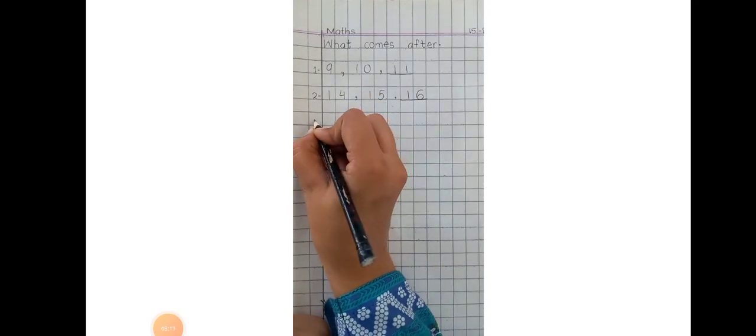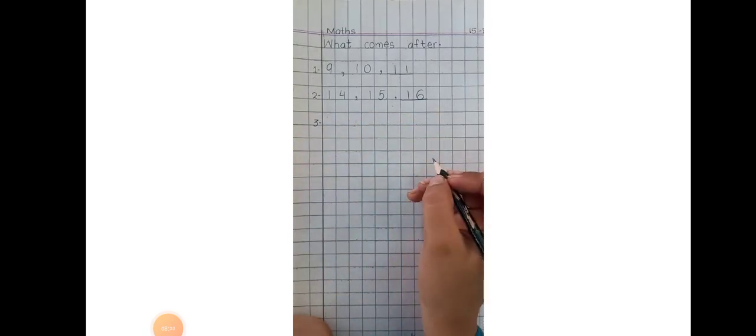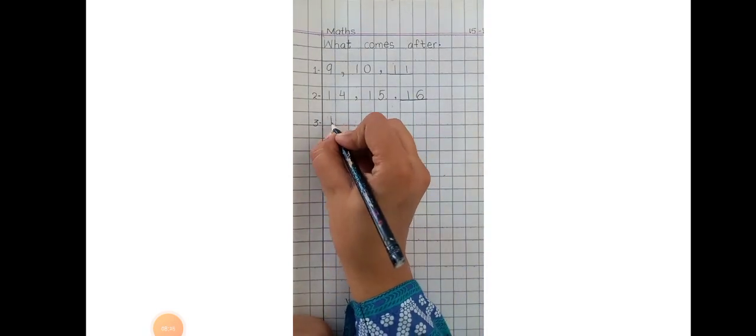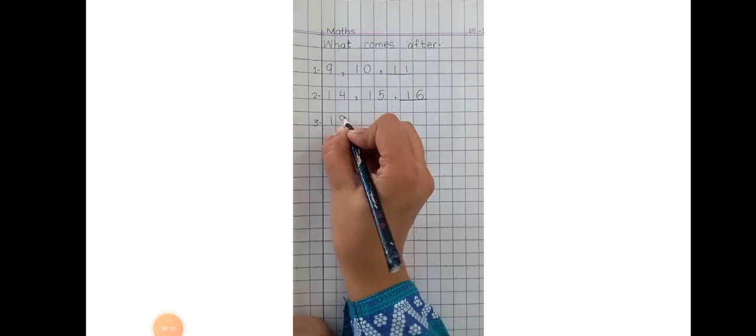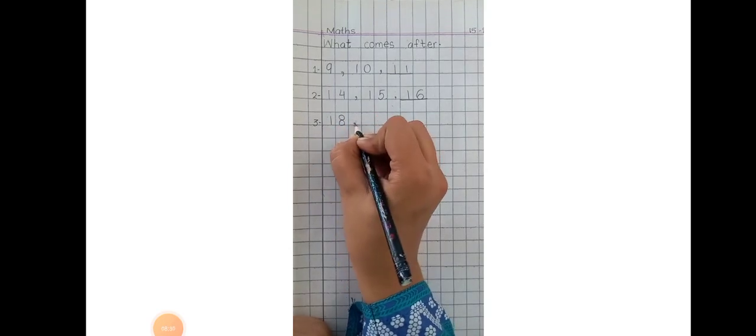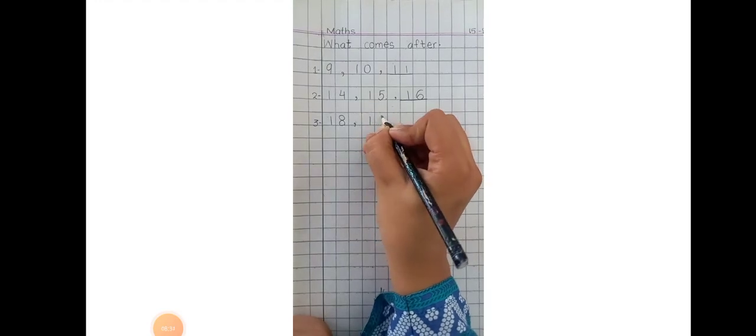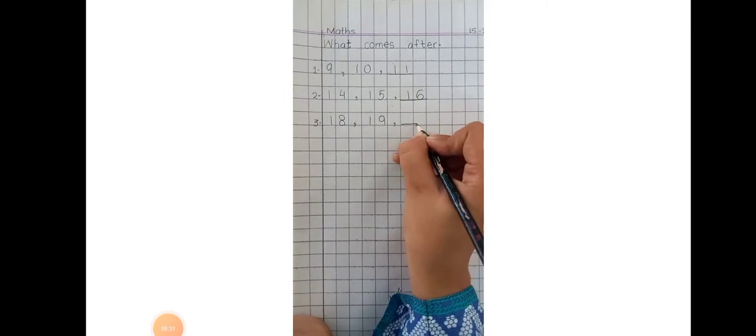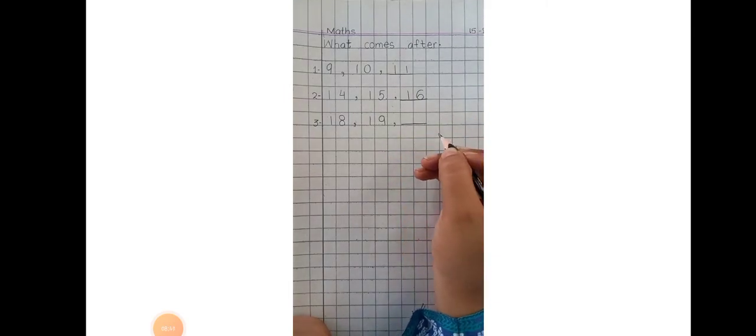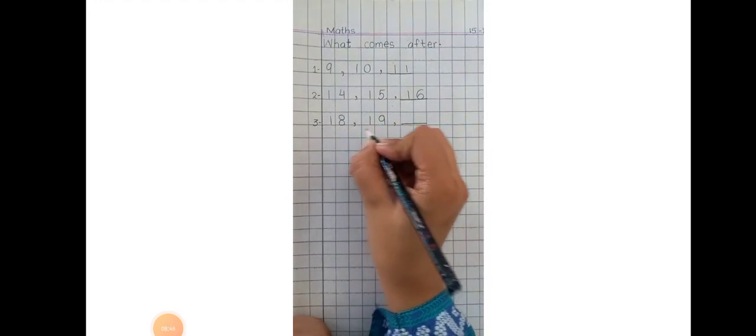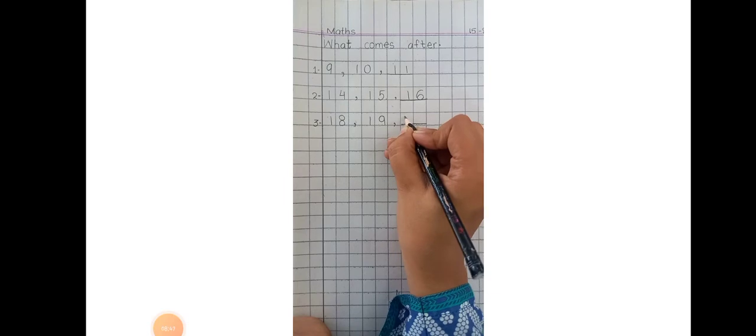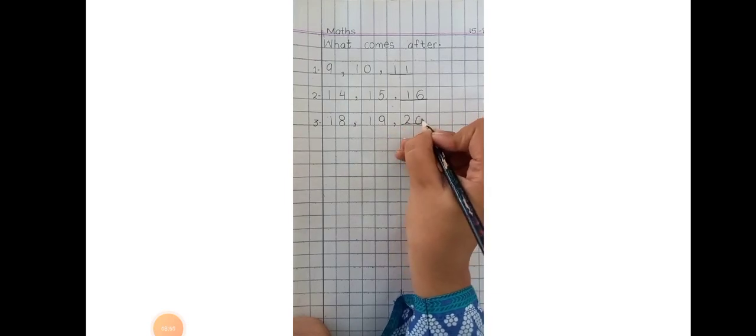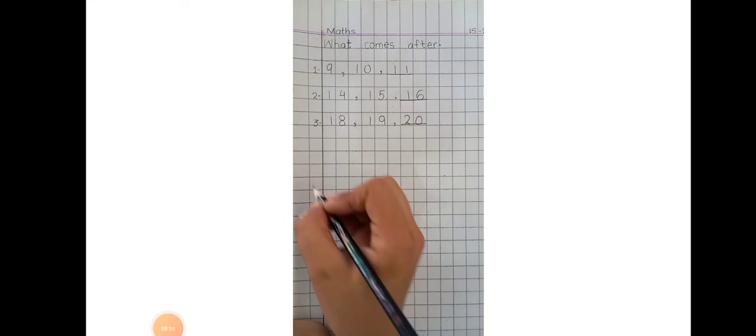Again leave one line and write down number 3. Write down 18, comma, 19, comma, and dash. What comes after 19? 20. Yes. 18, 19, 20.